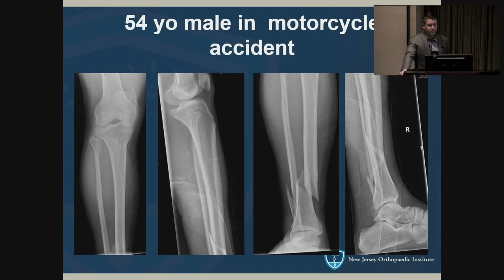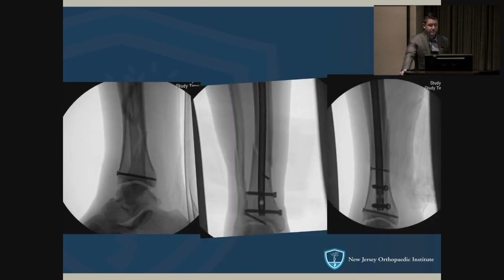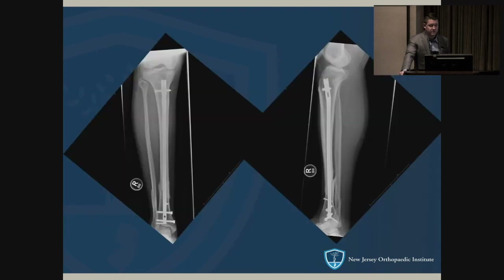Case two: a 54-year-old in a motorcycle accident with a distal third fracture. On the lateral ankle radiograph it was hard to see, but based on the JOT study, a CT was obtained, which showed a posterior malleolus fracture — clearly visible on CT. That was secured with a single screw prior to reaming and nailing. This case also required a blocking screw, and it was fully healed at six months.